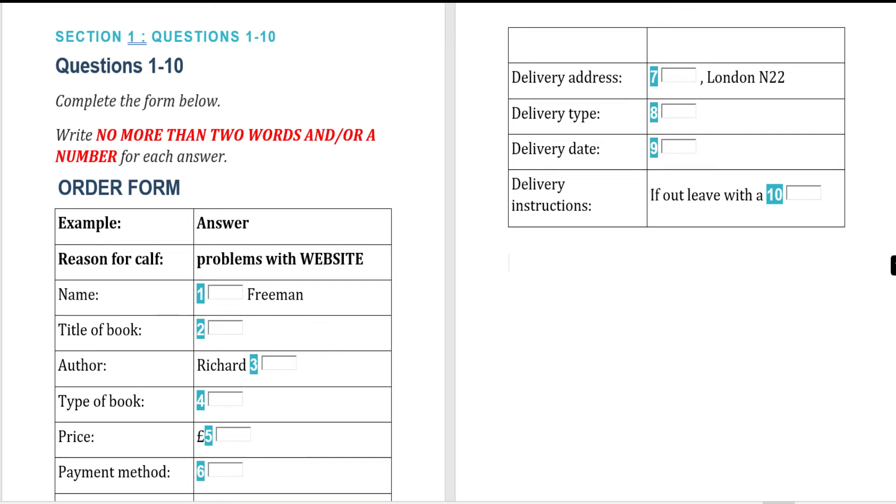You will hear a number of different recordings, and you have to answer questions on what you hear. There will be time for you to read the instructions and questions, and you have a chance to check your work. All the recordings will be played only once. The test is in four sections. At the end of the test, you will be given ten minutes to transfer your answers to your answer sheet.